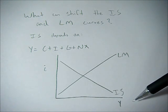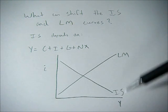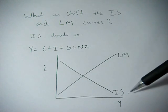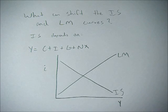We have our IS-LM model with GDP on the x-axis, the interest rate on the y-axis, downward sloping IS curve, upward sloping LM curve.